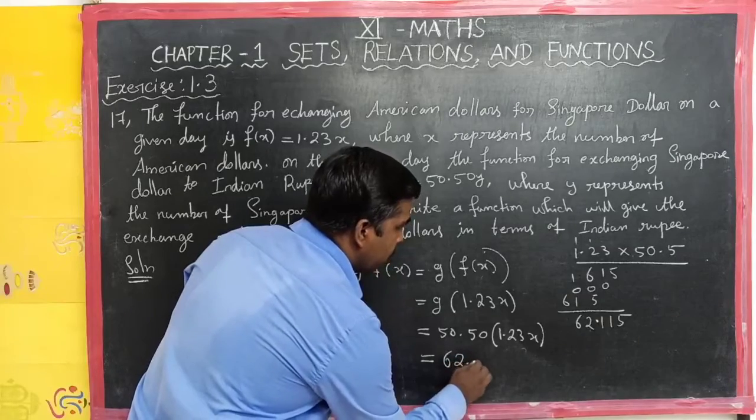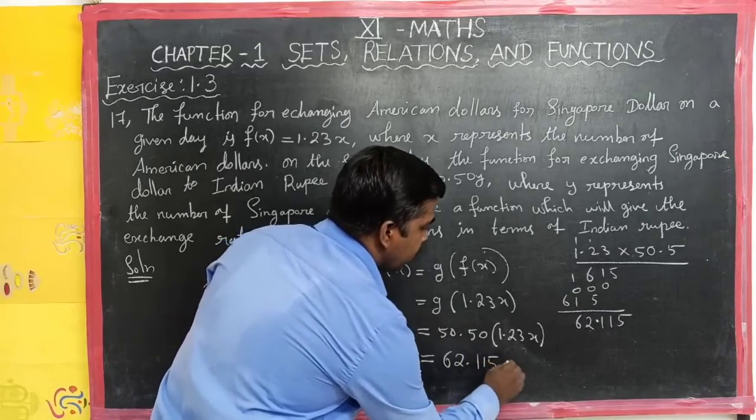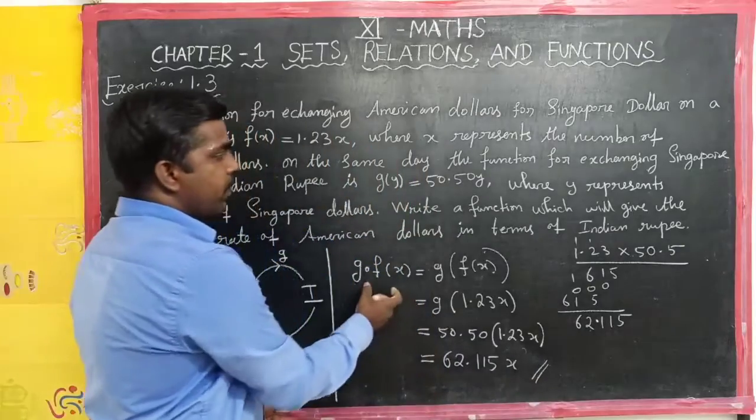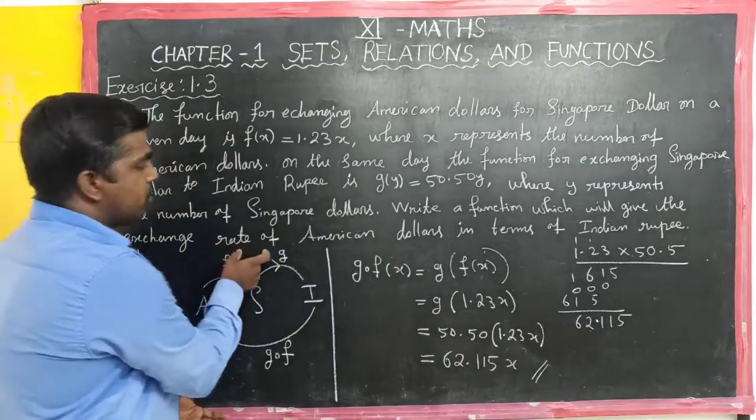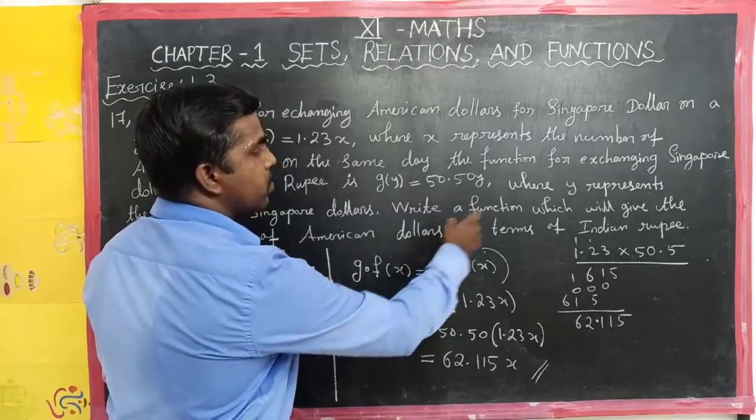Three digits after decimal point gives 62.115 into x. This is the required function which gives the exchange rate of American dollars in terms of Indian rupees.